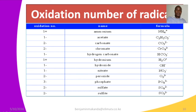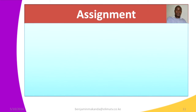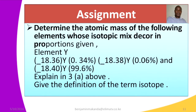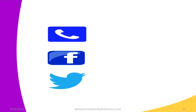Our discussion has covered valence of radicals and oxidation numbers. Now here is an assignment to help you understand the lesson. Determine the atomic mass of element Y, whose isotopic mixture proportions are given: mass 18.36 at 0.34%, mass 18.38 at 0.06%, and mass 18.40 at 99.6%. Also provide the definition of the term isotope.